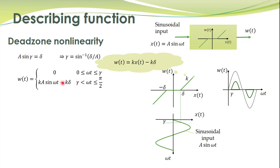This equation is valid after the input exceeds the value delta. Once we have this expression for w(t), we can find its fundamental component. This is an odd non-linearity, so aₙ and a₀ will be 0. We only need to compute b₁. b₁ is given by integrating from 0 to π and then multiplying by 2, because this is an odd non-linearity — whatever is the function from 0 to π, the same applies from −π to 0.